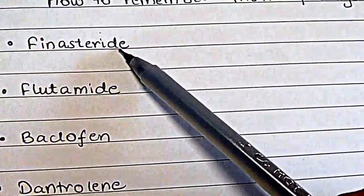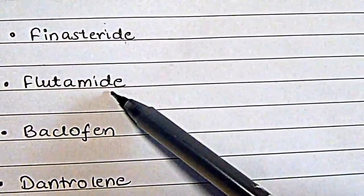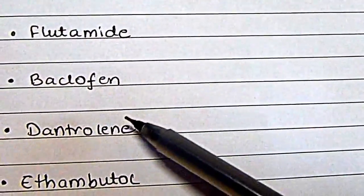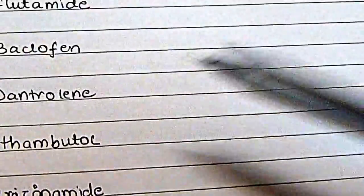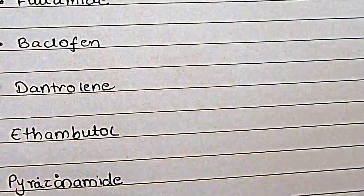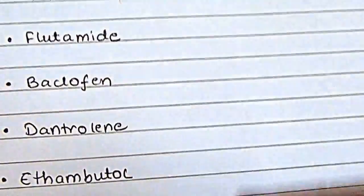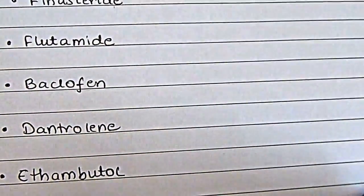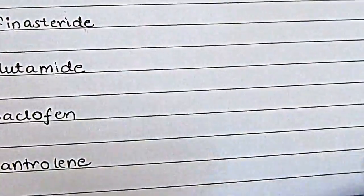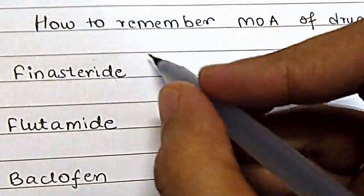For example, I cannot remember the mechanism of action of finasteride and flutamide, and I always get confused between baclofen and dantrolene. There are also some things about ethambutol and pyrazinamide I just can't remember. So I make a list of all the drugs I can't remember and write next to them whatever I keep forgetting about each drug.